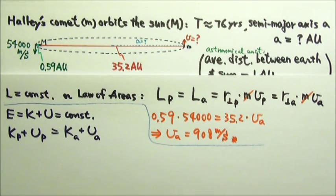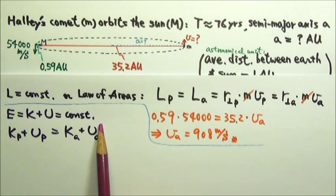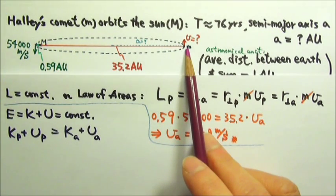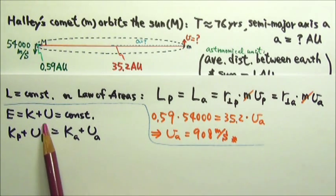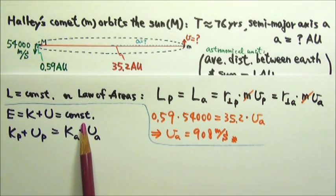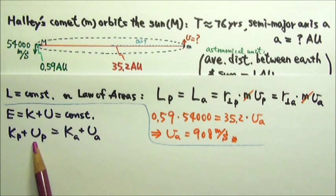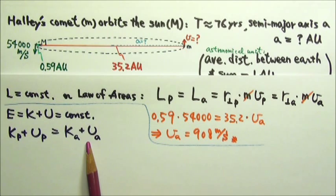Another way to solve this problem is to use the conservation of energy. The comet is only under the influence of conservative gravitational force. So the total mechanical energy k plus u should be conserved. The k plus u at the perihelion should equal to the k plus u at the aphelion.